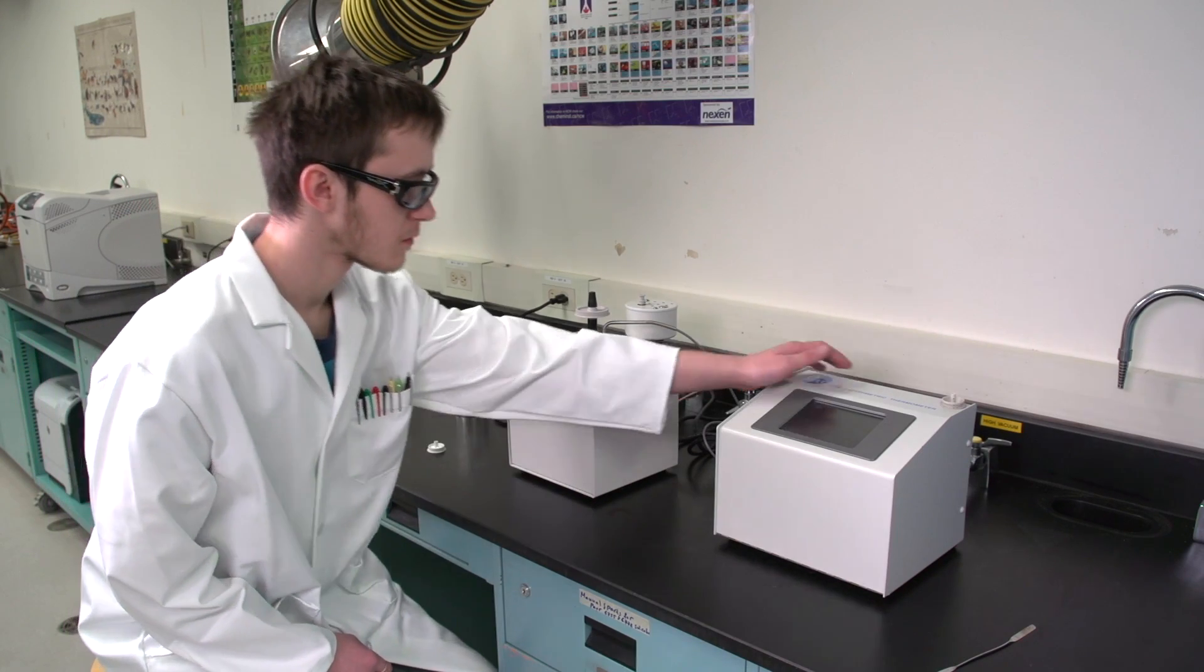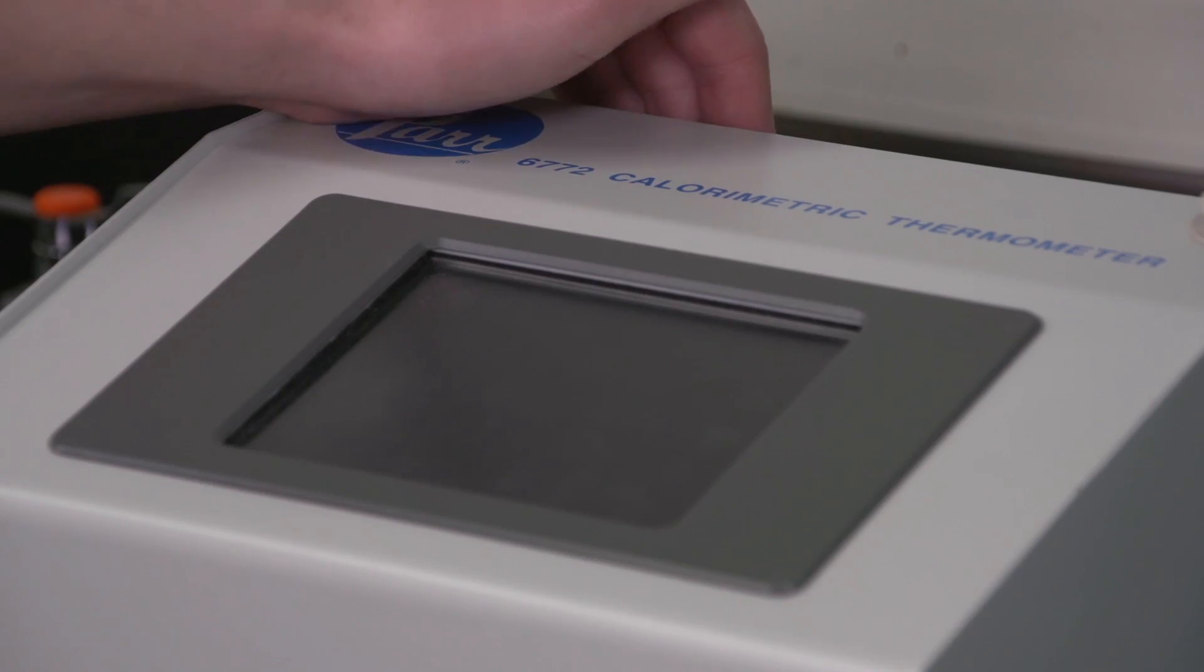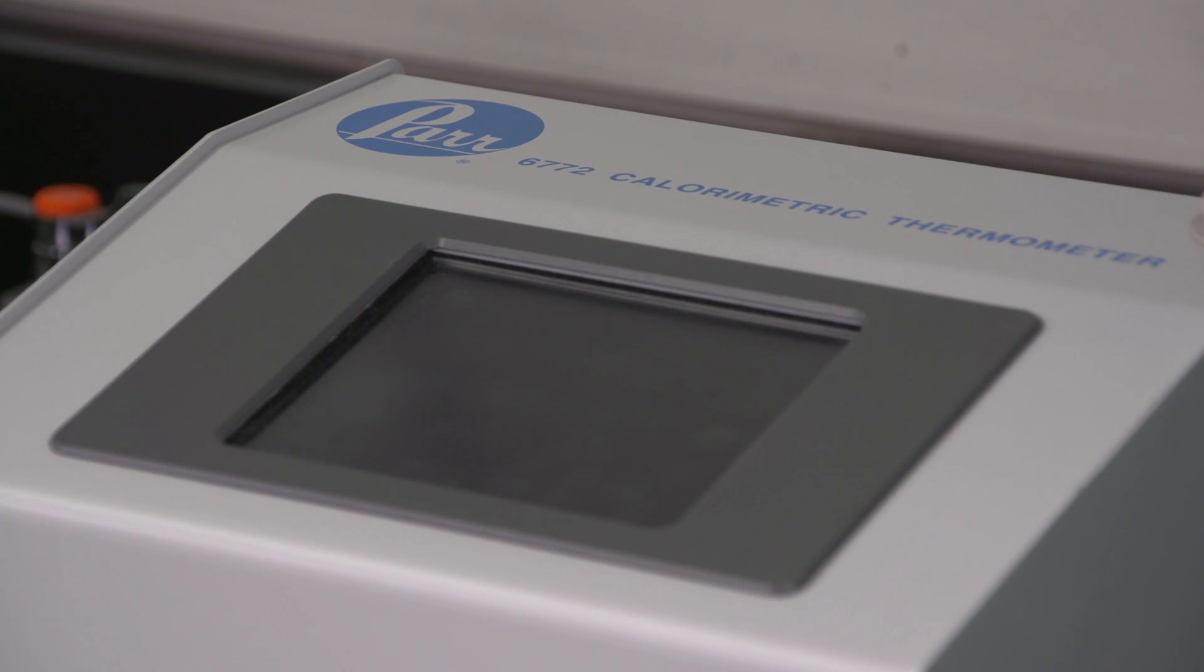To begin experiment 11, turn on the calorimeter. The switch is on the back of the instrument next to the power cord.